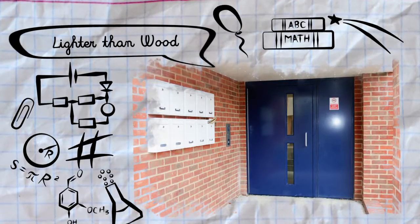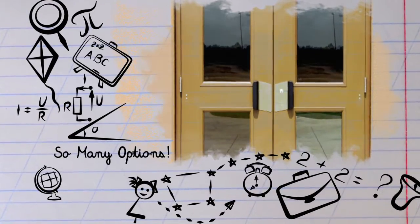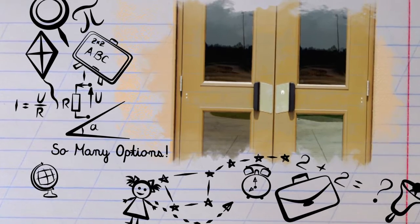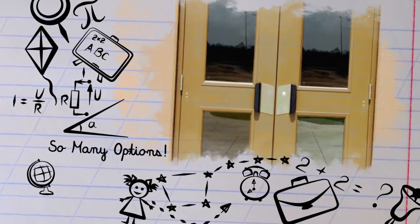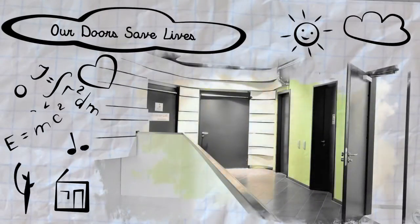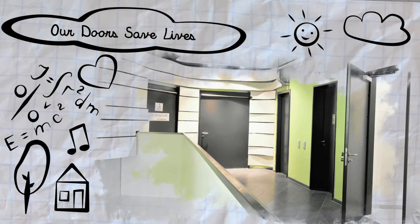Hurricane resistant assemblies have a variety of glass light, louver and other options while meeting hurricane resistant building codes. Bullet resistant door assemblies can save lives in the event of a lockdown.